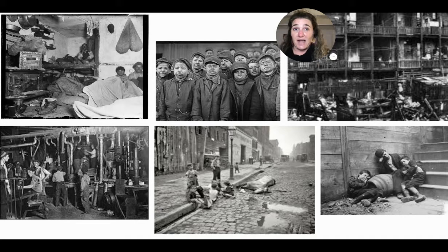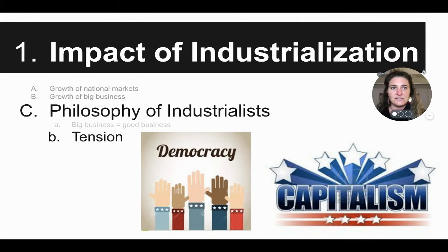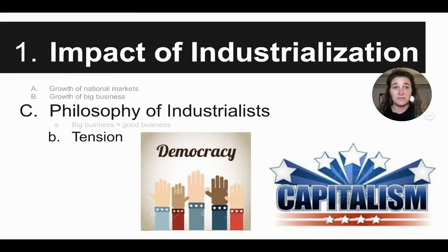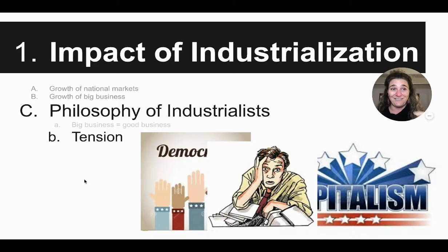This was definitely one of the impacts of industrialization. With the industrialists — these really wealthy men making a lot of money with big businesses — industrialization and this philosophy that big business was good business really ended up leading to a tension between democracy and capitalism. Capitalism is the economic system we use here in the United States: the idea that you have private companies and you can go out and start your own business as long as you're following the laws. You make your money, you keep your money. Democracy, on the other hand, is people participating and having power in the government.